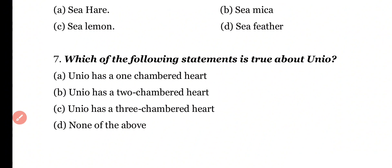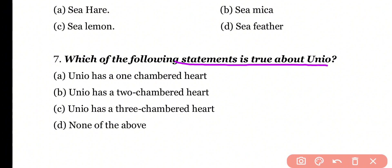Question number 7: Which of the following statements is true about Junio? Options: Junio has a one-chambered heart, two-chambered heart, three-chambered heart, none of the above. Correct answer is option C.